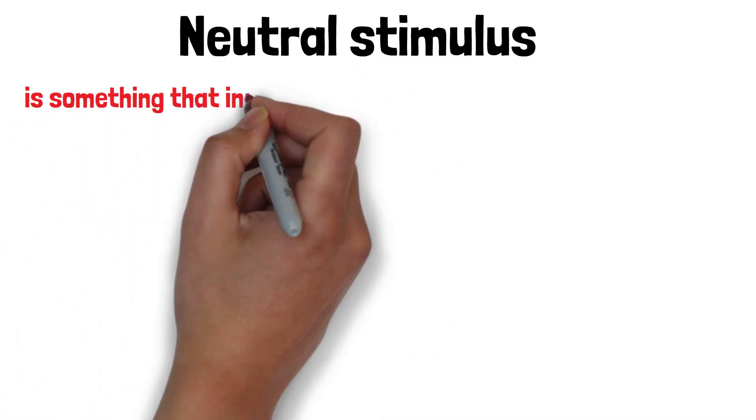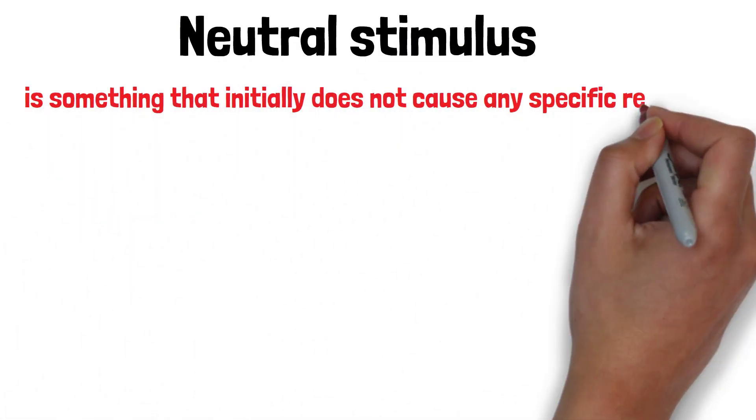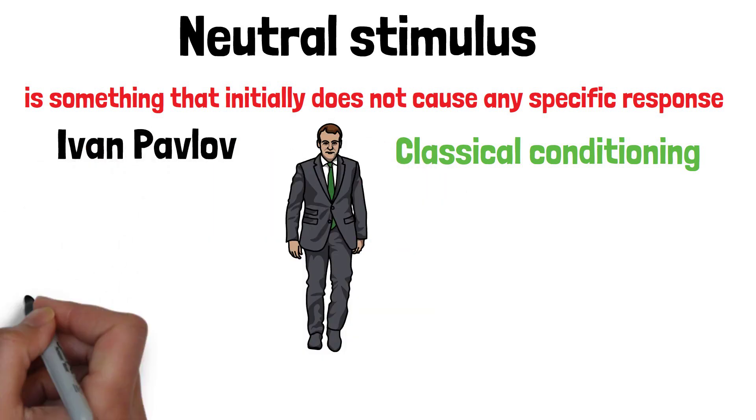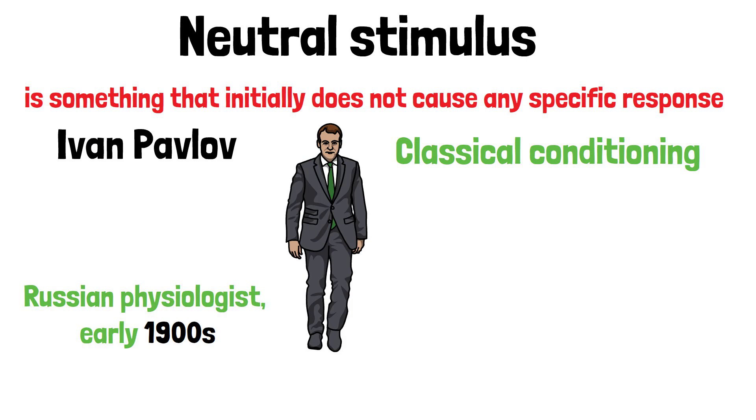A neutral stimulus is something that initially does not cause any specific response. This concept is part of classical conditioning, a learning process first described by Ivan Pavlov, a Russian physiologist in the early 1900s.